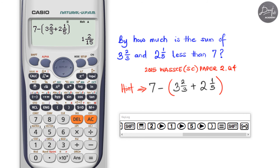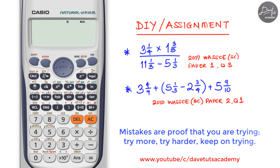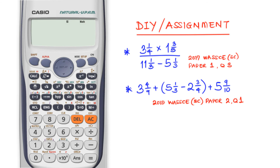Just following along with this lecture is not enough to gain proficiency. You need to get your hands dirty, tackle some questions, and attempt them with your own calculator. Coming up now is a DIY assignment — attempt the two questions on your own and put your answers in the comment section so we can see you are truly following along and building proficiency.